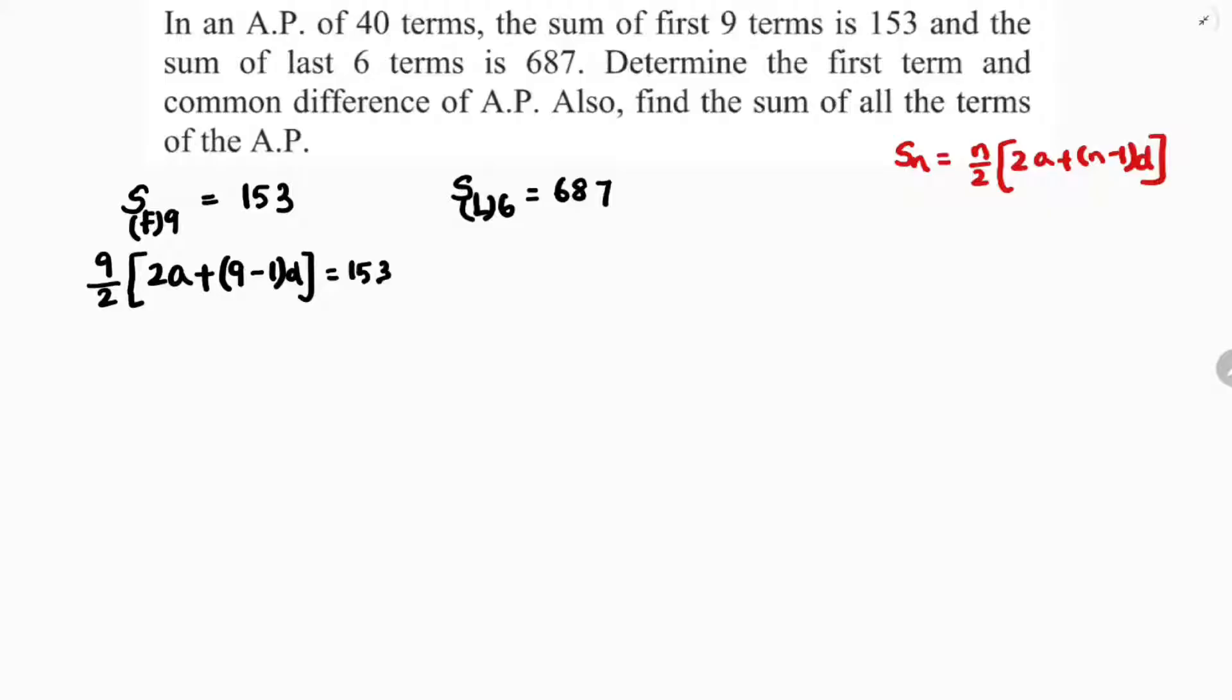So 9 by 2 into 2A plus 8D equals 153. Now if we take 2 common in this, 2 into A plus 4D equals 153. 2 and 2 will get cancelled, so A plus 4D equals 153 by 9.